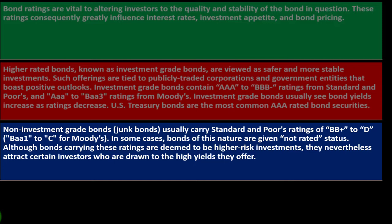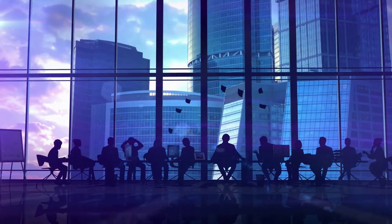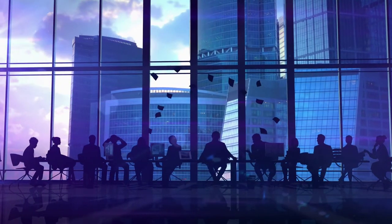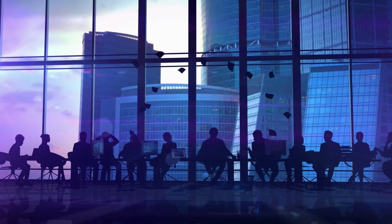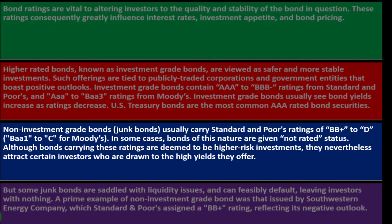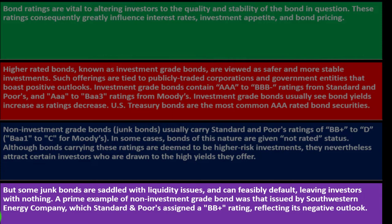Non-investment grade bonds, or junk bonds, usually carry a Standard and Poor's rating of BB-plus to D, and Ba1 to C from Moody's. In some cases, bonds of this nature are given a 'not rated' status. Although bonds with these ratings are deemed higher risk investments, they nevertheless attract certain investors who are drawn to the high yields they offer. If a company has low ratings, the only way they'll get bond financing is to issue bonds with a greater return — they have to pay more to attract buyers.